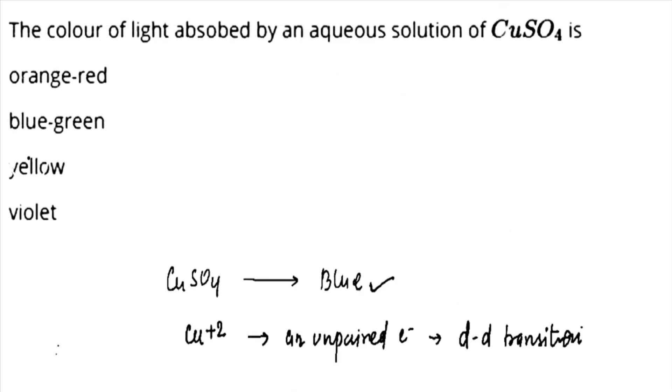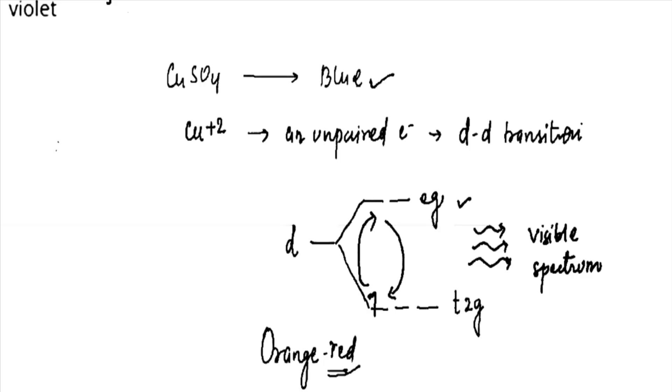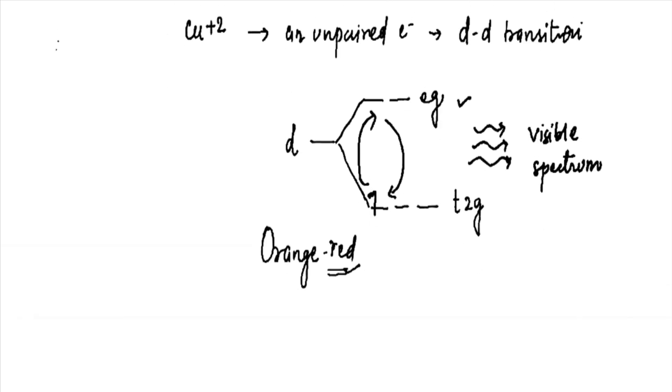Now let us have a look at the options. In the options, the first option itself says orange-red and all the other three options which are blue-green, yellow and violet are incorrect ones. This is how we can solve this question. I hope this is clear to you. Thank you.